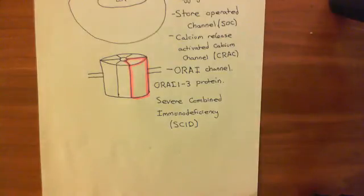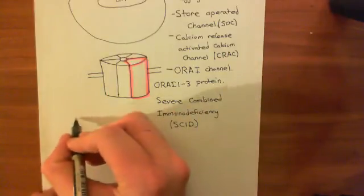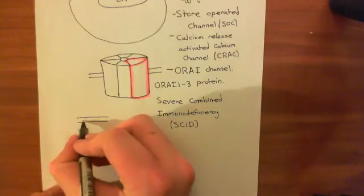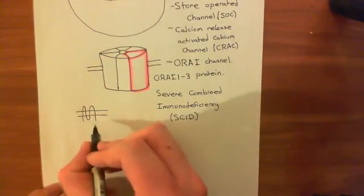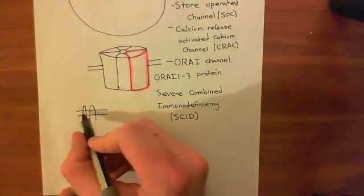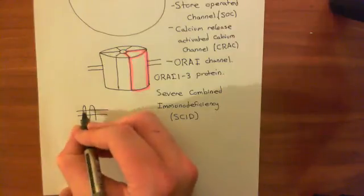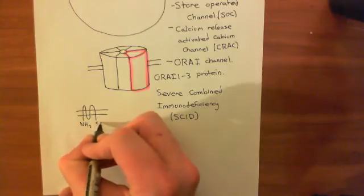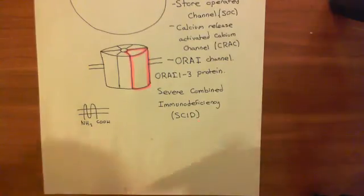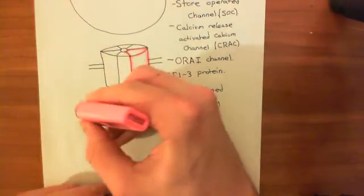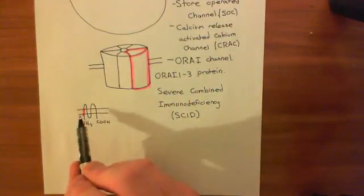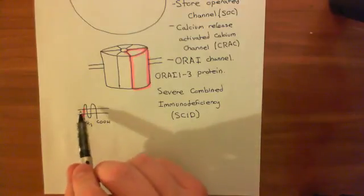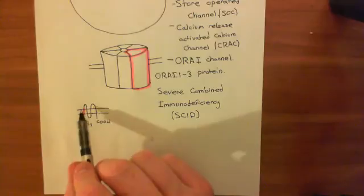Looking at the membrane-spanning topology of a single Orai-1 protein, it has four membrane-spanning domains. Both the amino terminus and the carboxyl terminus are on the intracellular side. The protein spans the membrane four times, with four membrane-spanning alpha helices. It is this first membrane-spanning alpha helix that lines the pore of the Orai-1 hexamer.